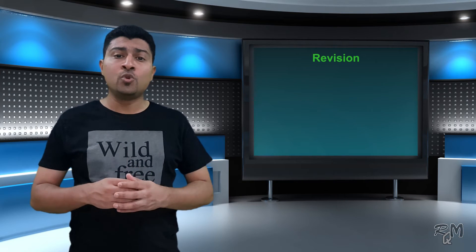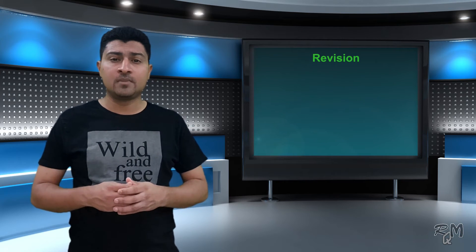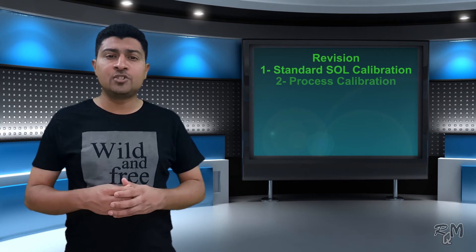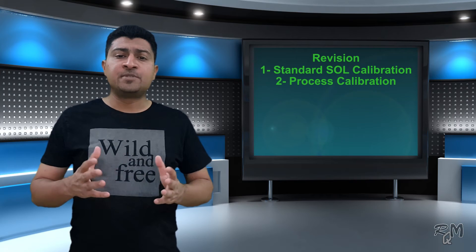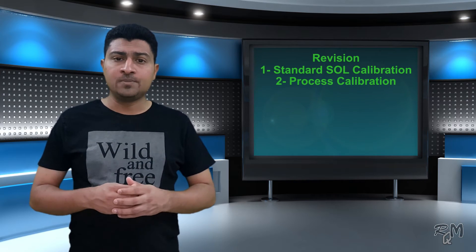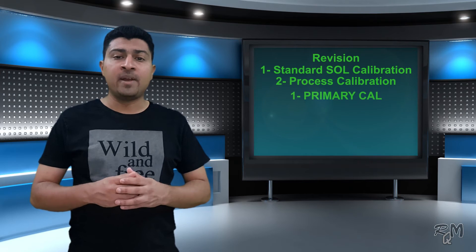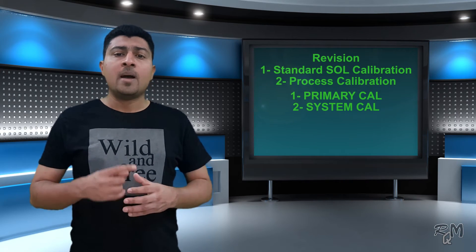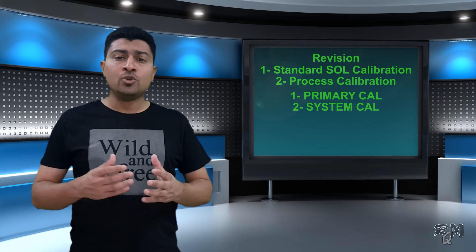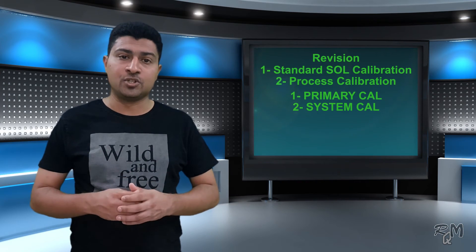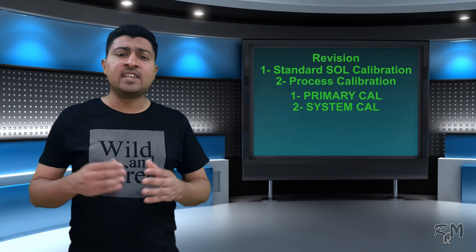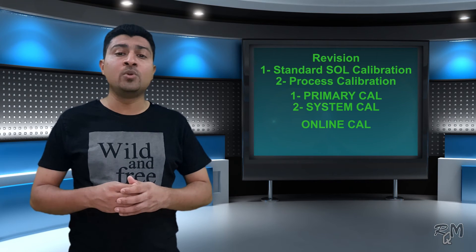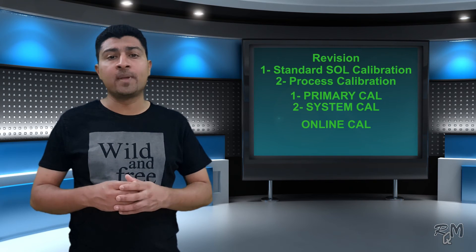In this part we discussed about two major types of calibration: number one, standard solution calibration; and number two, process calibration. Both types can be performed by two main calibration menus: number one, primary calibration menu; and number two, system calibration menu. Primary calibration is used to create a reference slope for system calibration. The last thing is online calibration, which you can perform through the read menu at any state without stopping the analyzer.